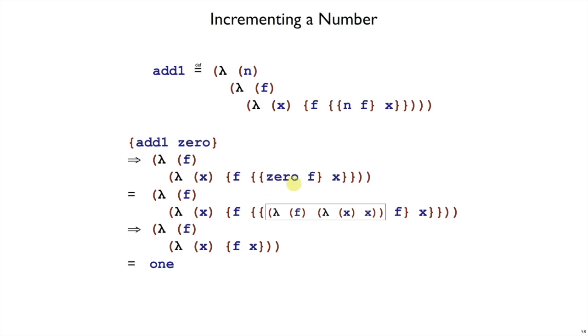Remember that the word 0 here really stands for this lambda term. And so we've got an application of this lambda term to f and x. And if we pass f in and replace all the f's with f, and pass x in and replace all the x's with x, then we will just get this x left over. So that's why this whole application here simplifies to just x.